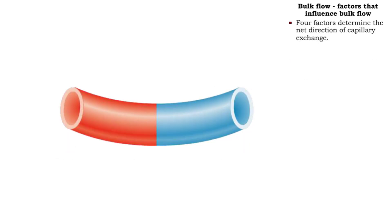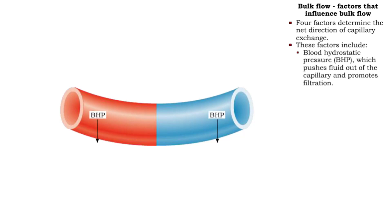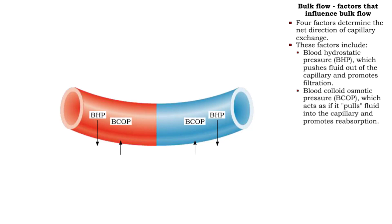There are four factors that determine the net direction of capillary exchange. Blood hydrostatic pressure, generated by the pumping of the heart, promotes filtration by pushing fluid out of the capillary. Blood colloid osmotic pressure is caused by the colloidal suspension of plasma proteins that are too large to pass through fenestrations or gaps between endothelial cells.